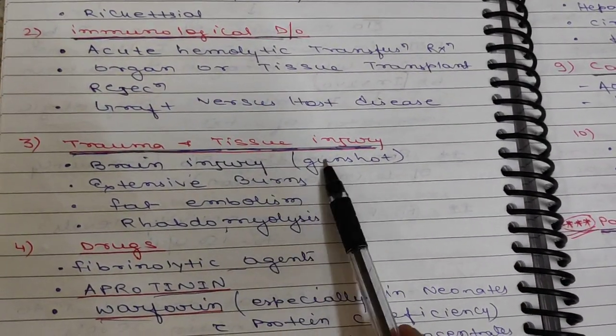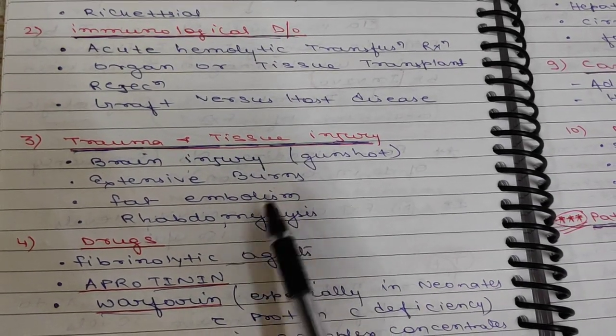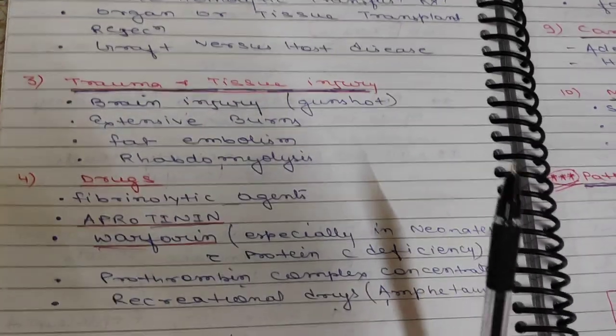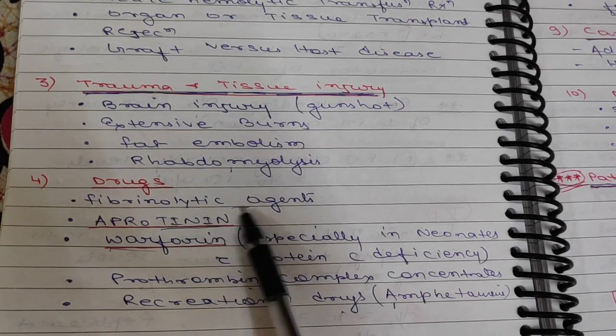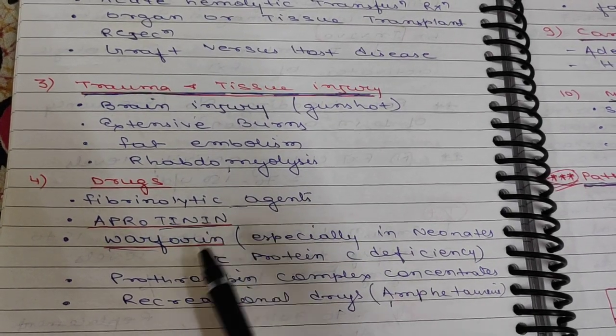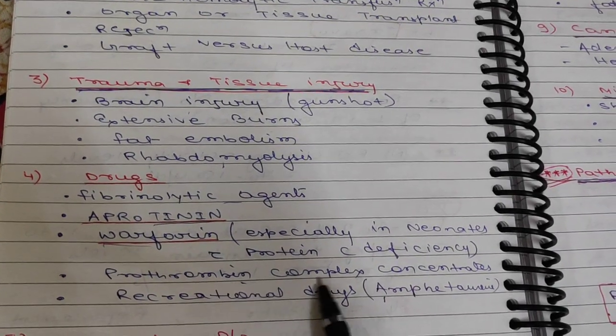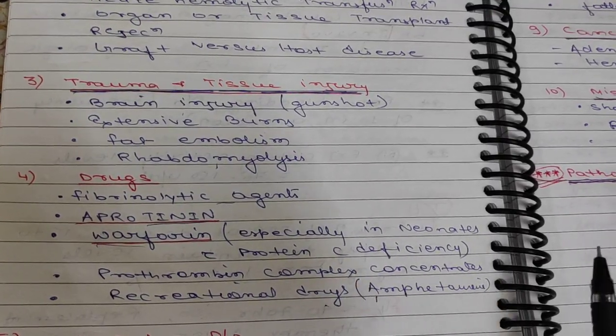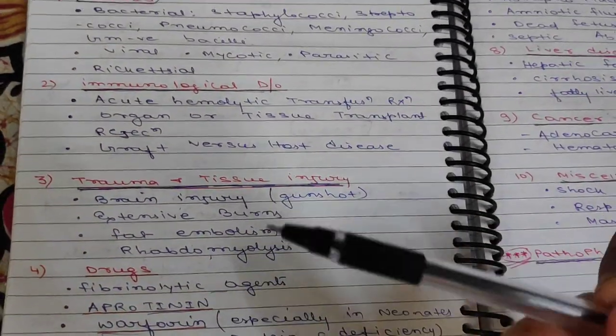Use of drugs such as fibrinolytic agents, epsilon-aminocaproic acid, warfarin, prothrombin complex concentrates, and recreational drugs such as amphetamines can lead to DIC.